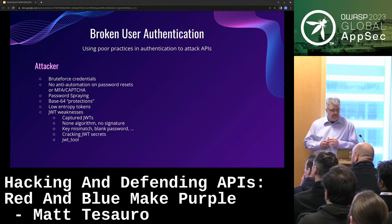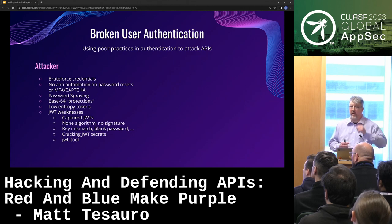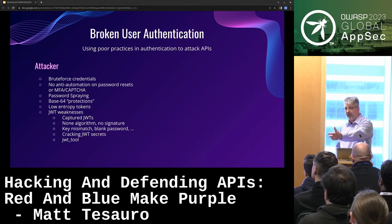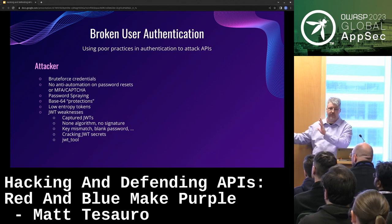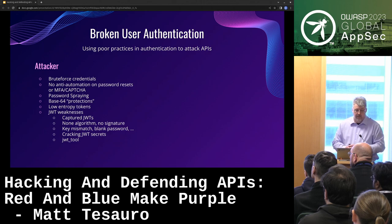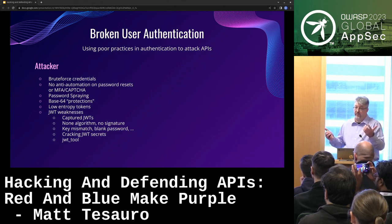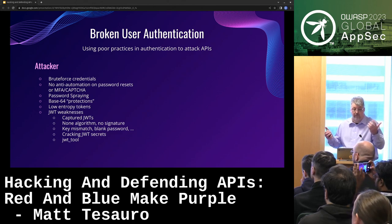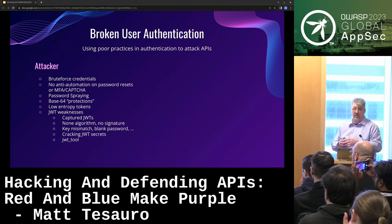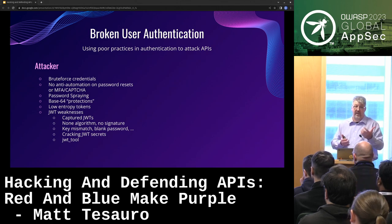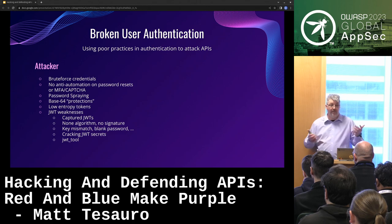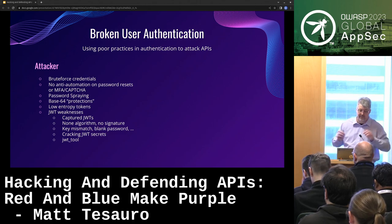Broken user authentication — this is a case where I can log into an API: you send me a username and password, I give you back a token, and you make the rest of the requests with that bearer token. Obviously I can brute force credentials. There's no reCAPTCHA for an API, so I can usually brute force those easily. APIs are made to respond fast — they actually help your brute forcing. They're designed to be fast, which is kind of a nice thing for an attacker.